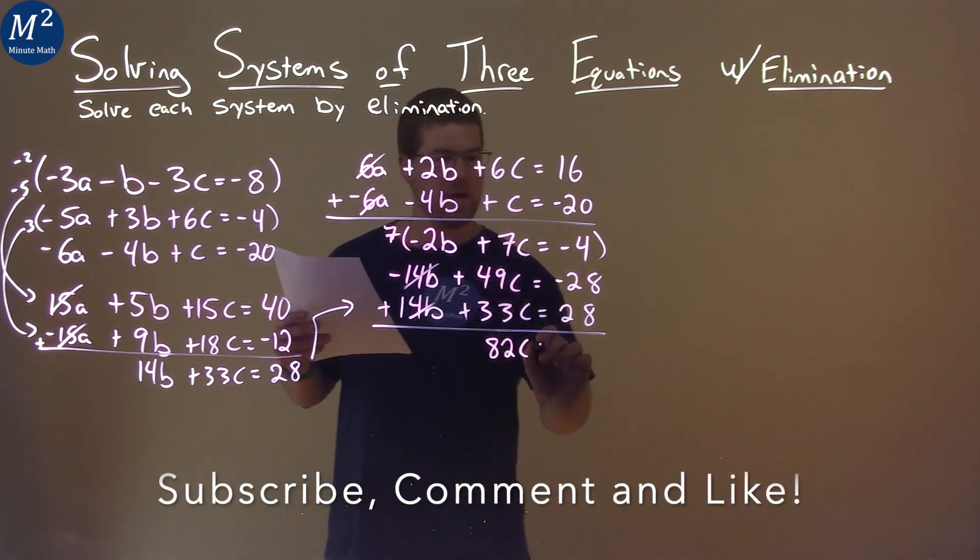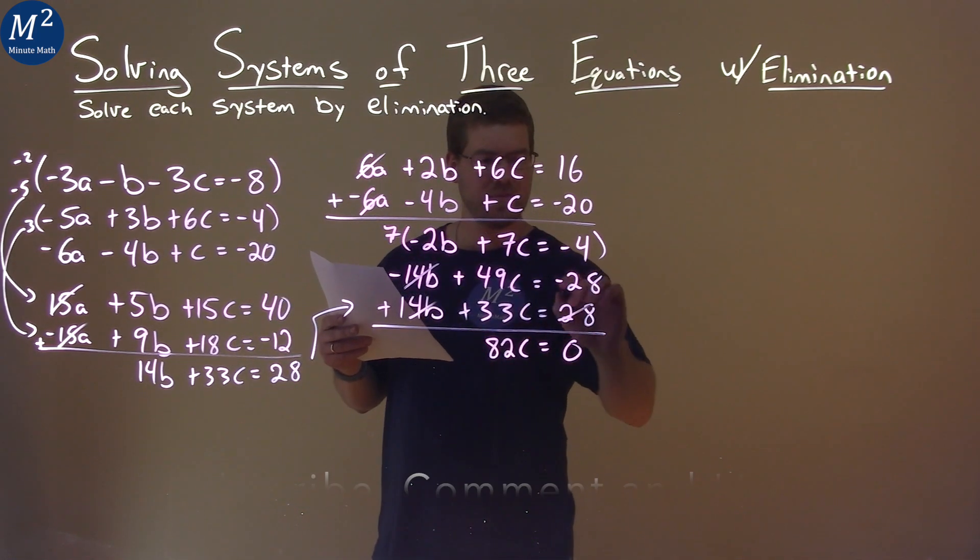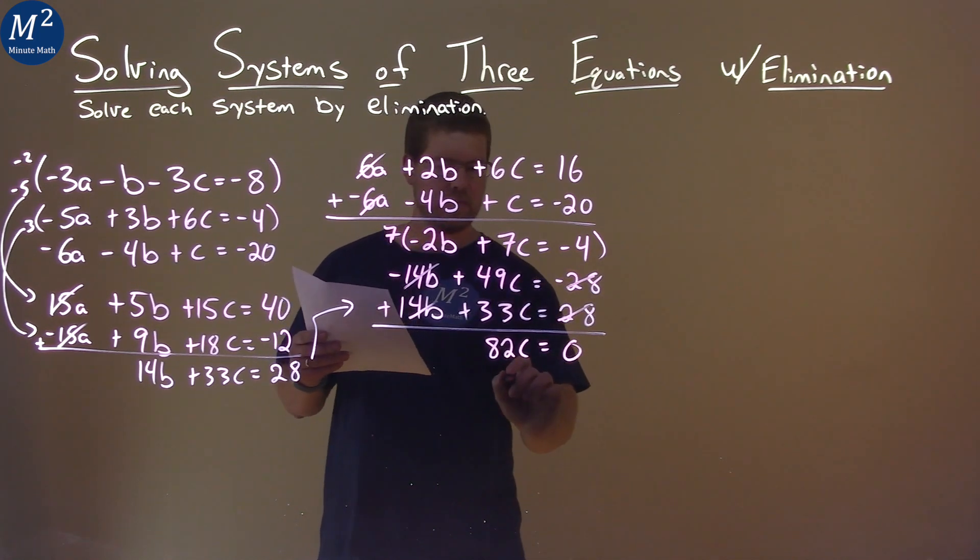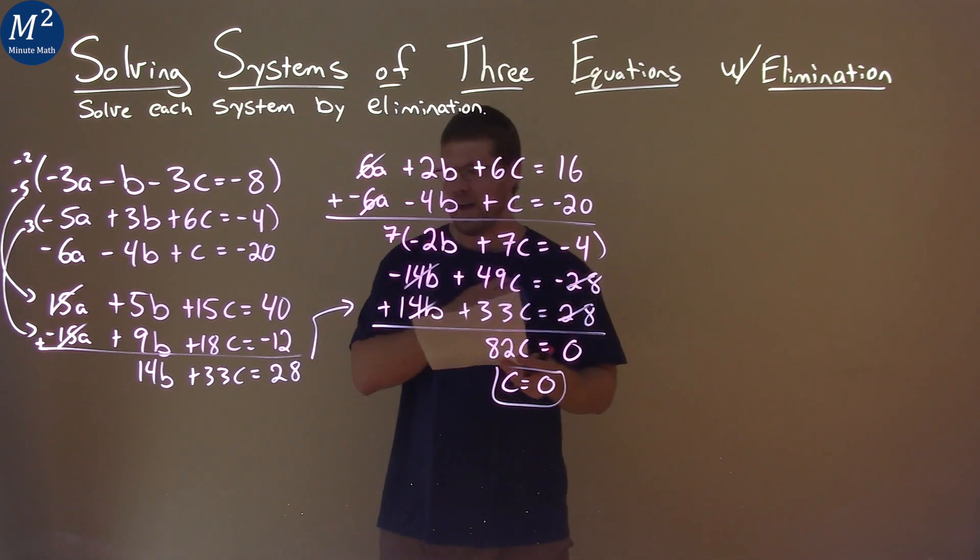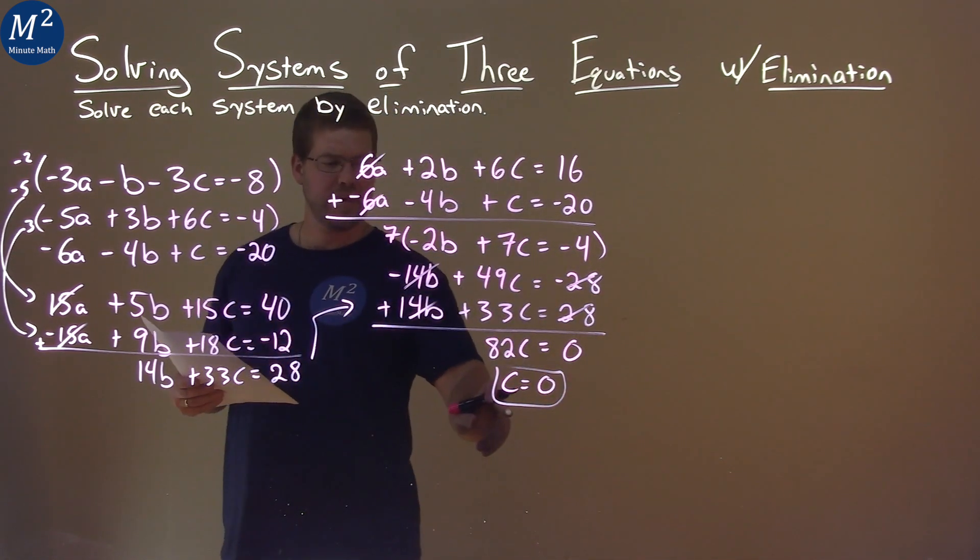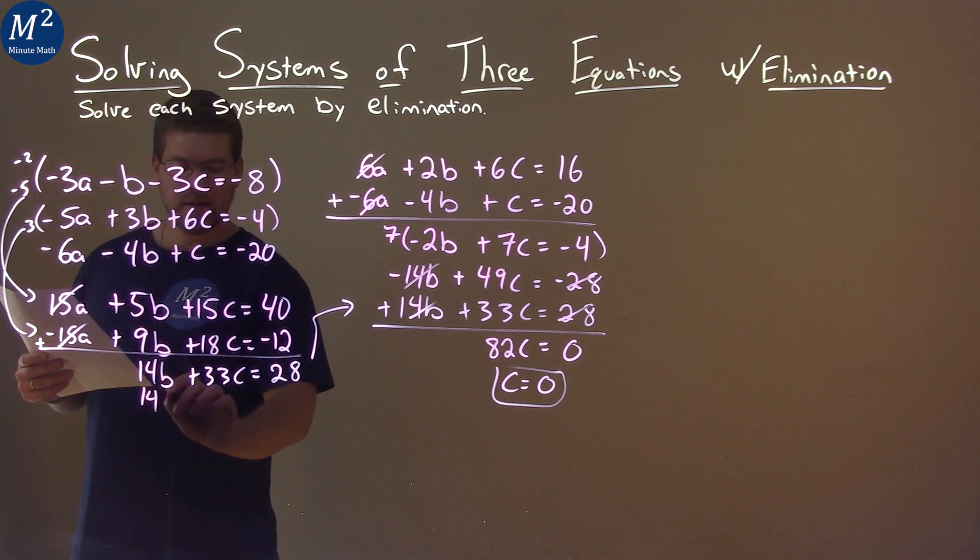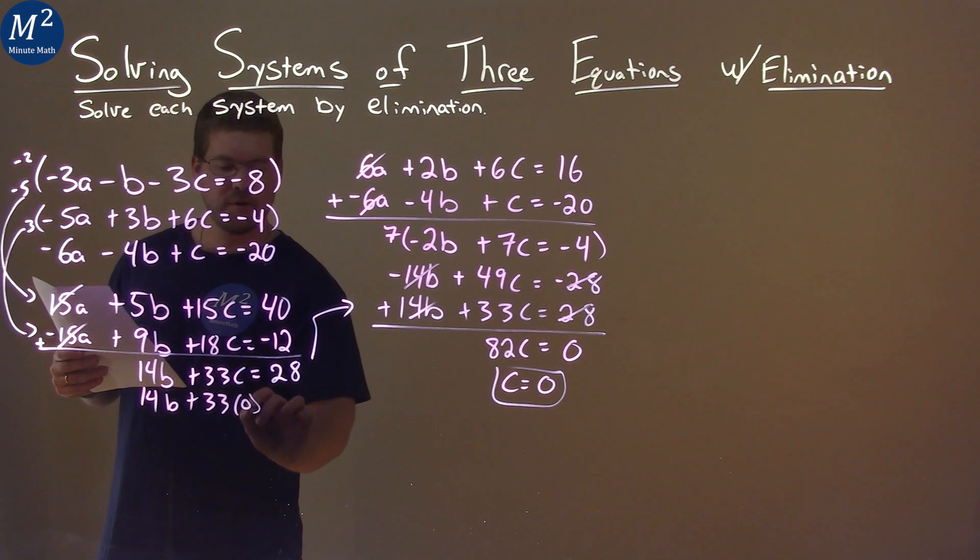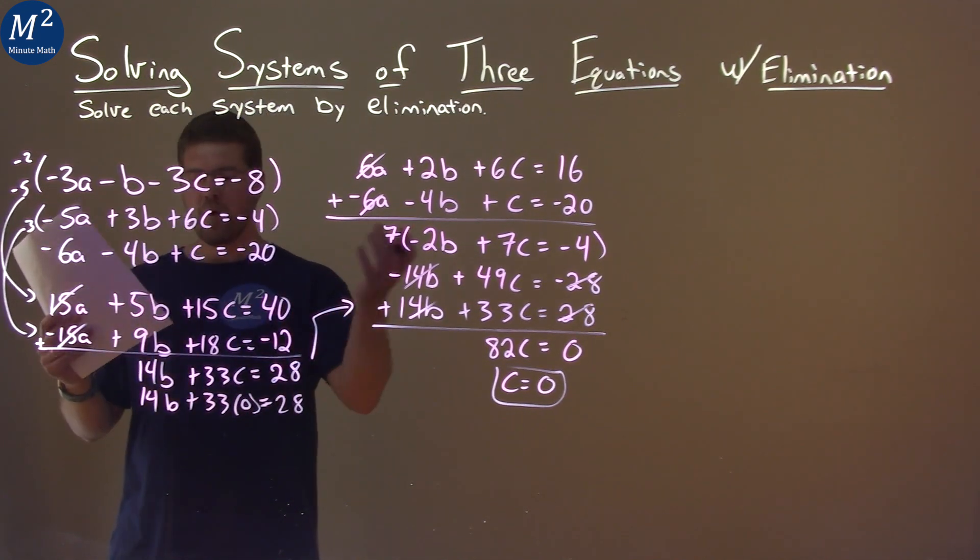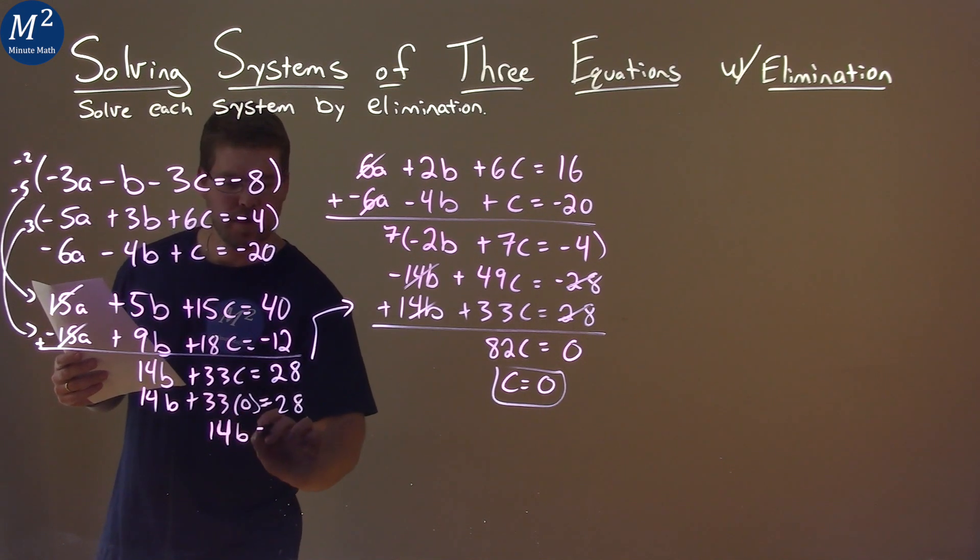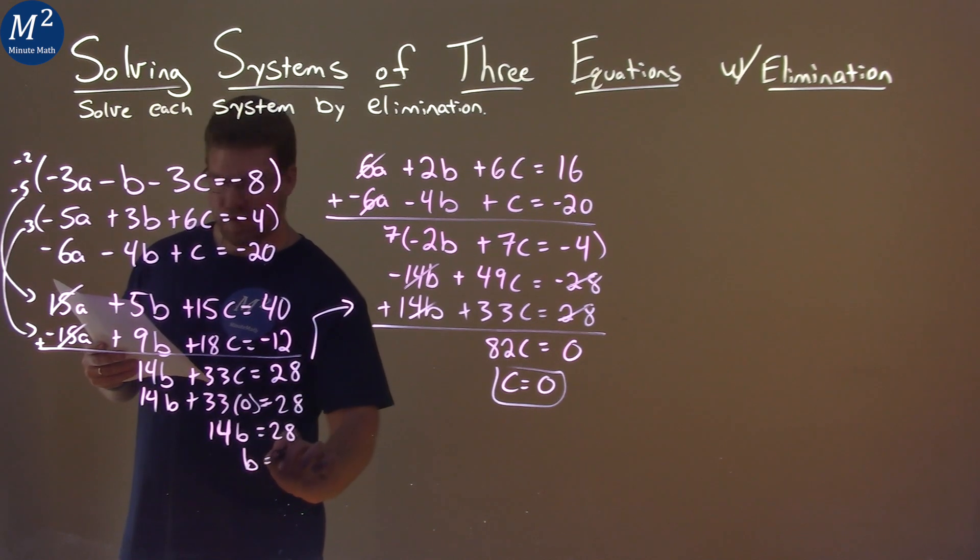Equals negative 28 plus 28 is just 0. They cancel each other out. Divide both sides by 82, and after all that, c is just equal to 0. All that work for that. This actually makes it pretty easy. We take that c equals 0, plug it in here. Let's solve for b. 14b plus 33 times 0 equals 28. 14b equals 28. Divide both sides by 14, and b equals 2.